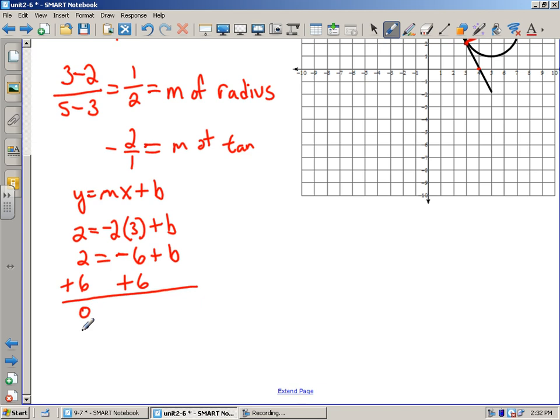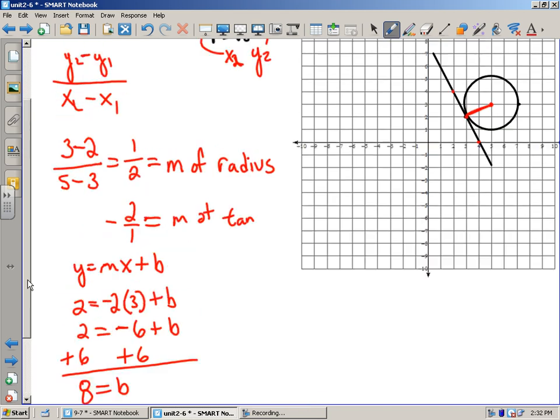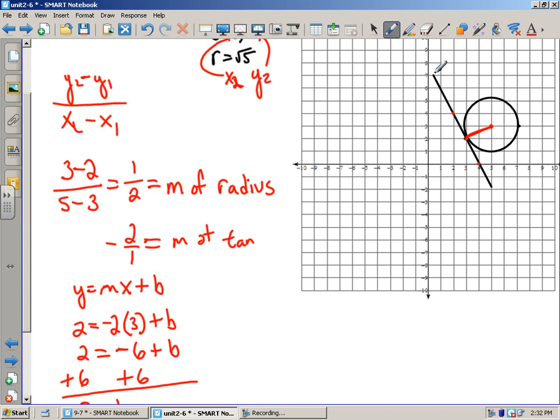Then I get 2 = -6 + b, and then I add 6 to both sides and I get 8 = b. So my y-intercept of this line is 8. Well look, if this keeps going it will go right through 8.